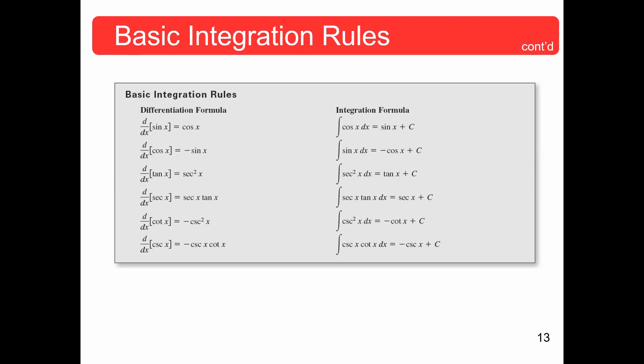Now we're going to do the same thing with our trig functions. If the derivative of sine is cosine, then the integral of cosine is sine. If the derivative of cosine is negative sine, then the integral of sine is negative cosine. The derivative of tangent is secant squared, therefore the integral of secant squared is tangent.